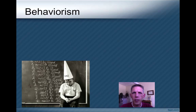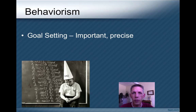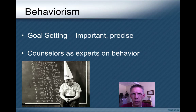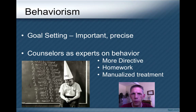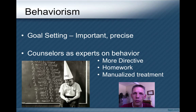Behaviorists, probably more so than any approach we'll study, have a precise and focused way of doing goals. Goals are important in behaviorism and cognitive behaviorism. Behaviorists also tend to see the counselor as the expert on behavior — clients are experts on their lives, but counselors know best how to help clients change behavior. As such, they tend to be more directive, telling clients what they need to do. They assign more homework, and in some cases treatment has been written in a manual with step-by-step instructions, which works well in research but not as well in the real world.